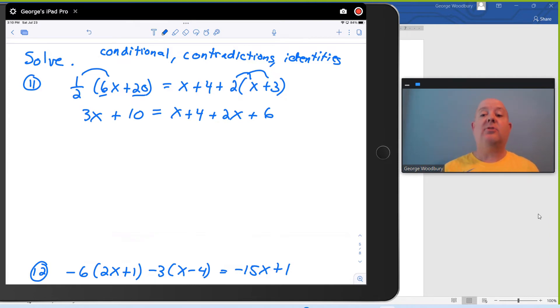Okay, distributing done. Now I've got some like terms on the right-hand side. I've got an x and a 2x to combine, and I have a 4 and a 6 to combine. Let's do that. The left side is 3x plus 10. The right side, x plus 2x is 3x plus 4 plus 6 is 10. And right here, you should start to get an idea that something unusual is happening because the left side and the right side are identical.